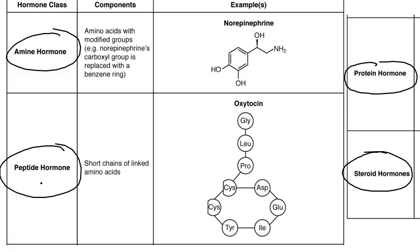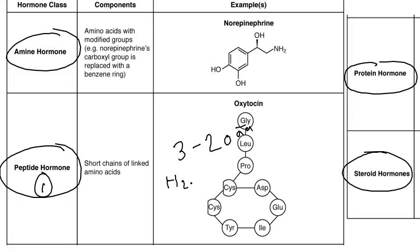Peptide hormones are composed of chains of amino acid sequences that range approximately from 3 to 20 amino acids long. Most of the hormones we know of in the human body are peptides, and they are water soluble.